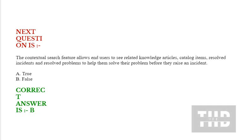The contextual search feature allows end users to see related knowledge articles, catalog items, resolved incidents, and resolved problems to help them solve their problem before they raise an incident. Options are true or false. Correct answer is false.